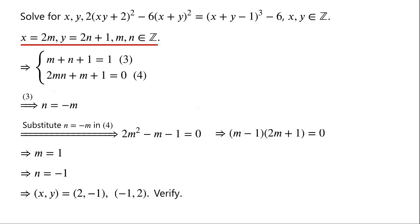Now we verify whether they are solutions of the original equation. In each case, x times y equals negative 2 and x plus y equals 1. So the left-hand side of the original equation equals 2 times (negative 2) plus 2, all squared, minus 6 times 1 squared, which equals 0 minus 6, which is negative 6. The right-hand side of the original equation equals (1 minus 1), all cubed, minus 6, which equals 0 minus 6, which is negative 6. So they are solutions of the original equation.